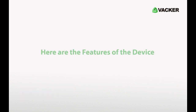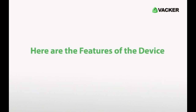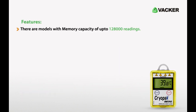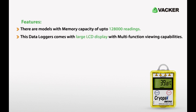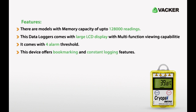We will look at major features. We have multiple models with memory up to 128,000 readings. It has a large LCD display, and you can see different status readings displayed on the screen. As explained, it has four alert levels. You can make up to four markings at different times, which you can see in the report. The alarm settings are programmable, with multiple start functions.